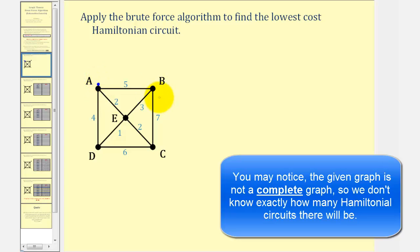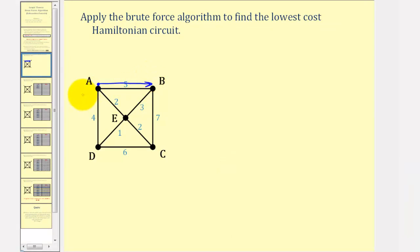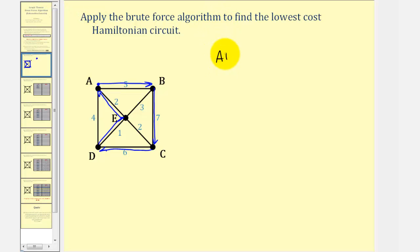We'll list all the Hamiltonian circuits beginning with A and then B. So if we go from A to B, notice how we have two choices: we can go from B to E or B to C. Let's go to C. From here we still have two choices: we can go from C to E or C to D. Let's go to D. From here we have to go to E and then back to A. So we have A, B, C, D, E, A.